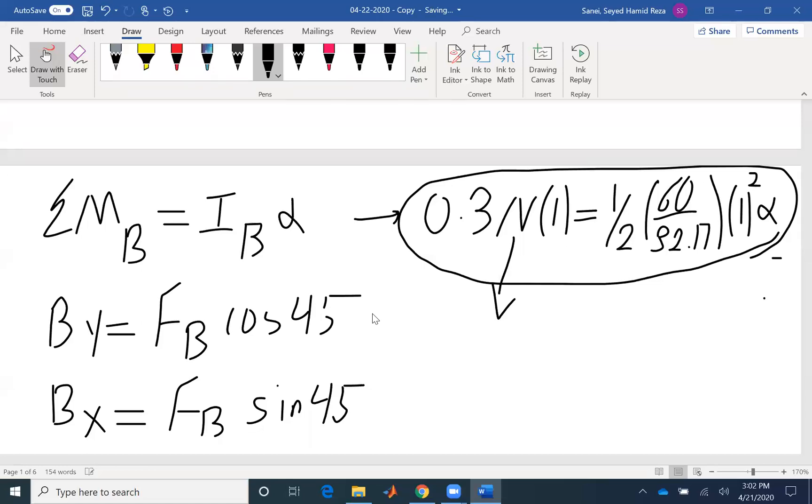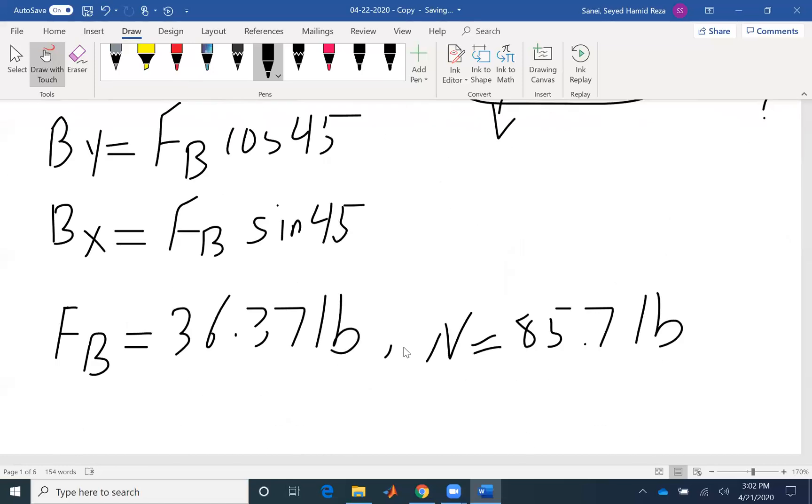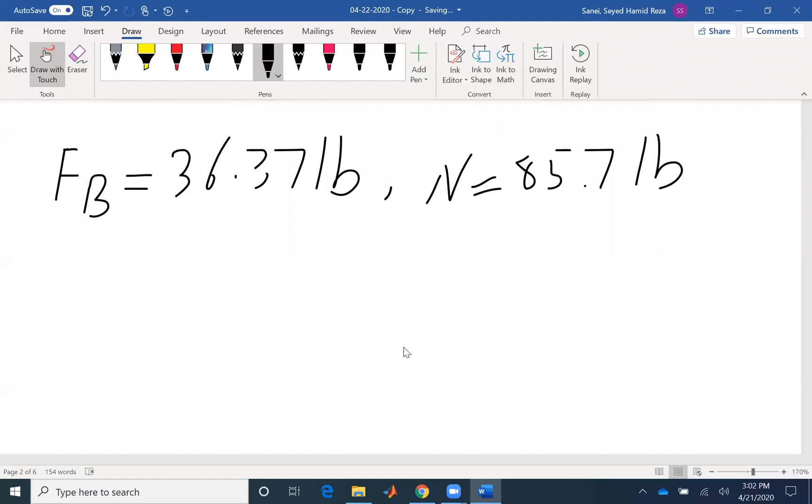I can find alpha to be 27.6 radians per second squared.